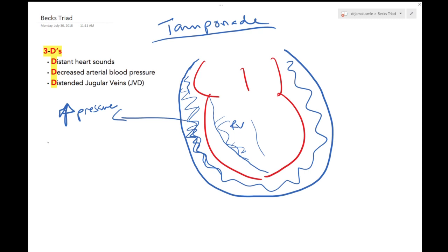This is what we call as RV collapse. If you see this word in any of your questions, this just means that the pressure in the pericardial space is more than the RV, and this signifies that there will be less preload.